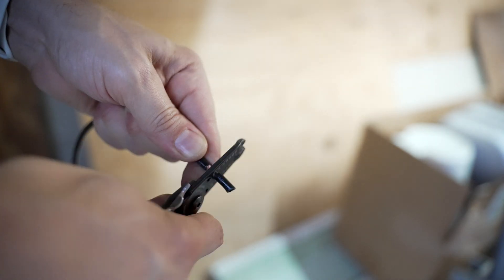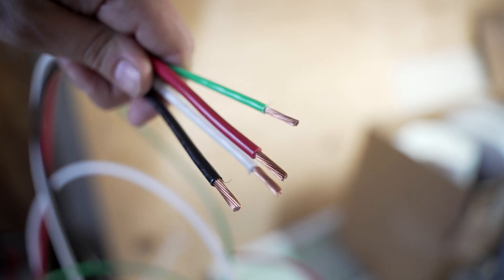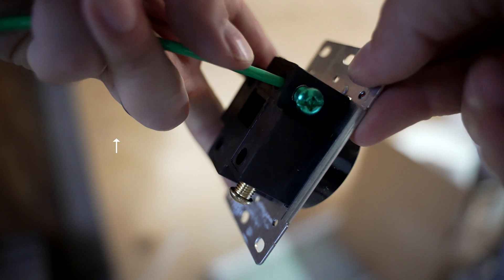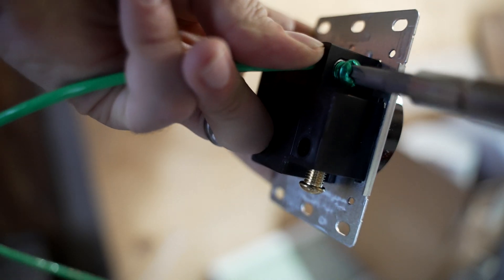I used 8 gauge THHN stranded for the two phases and the neutral, and then the ground is a 10 gauge stranded wire, which is appropriate for a 50 amp circuit.